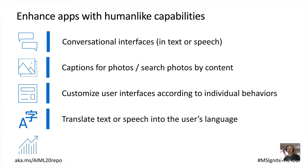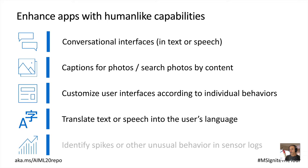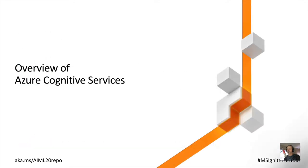You could also automate the human process of scanning streams of data for anomalies and react accordingly. These are just a few examples of the types of things you can do by adding human-like capabilities through AI, and a lot of that can be done with basic services that are already ready for you out of the box.